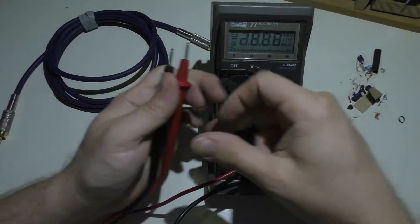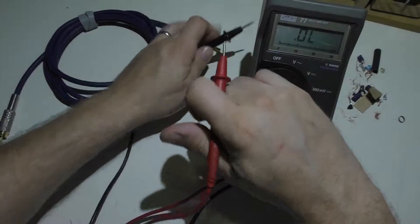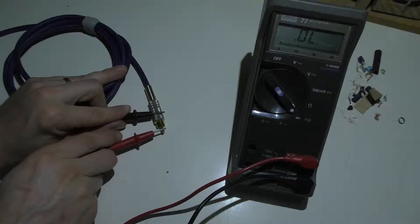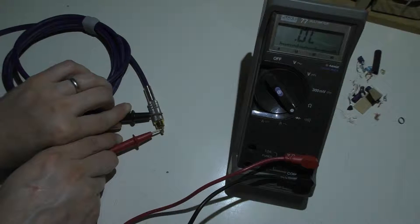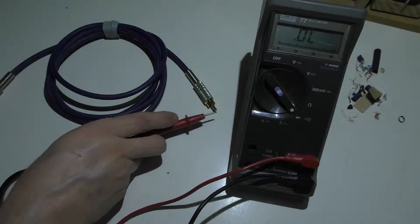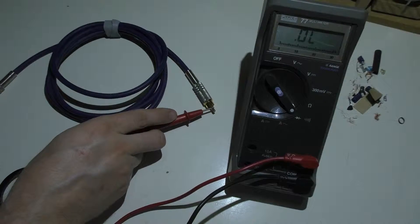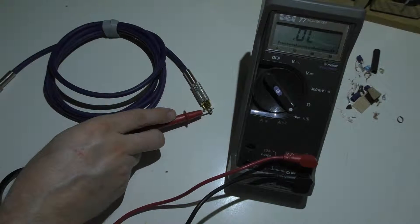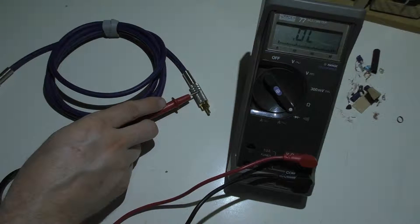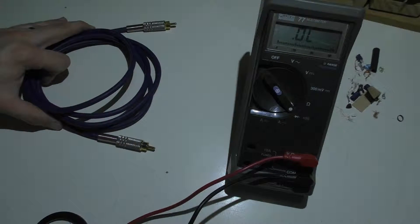And first we'll just do the shield against the pin, which we have nothing. We'll go off to the other side over here. We'll do pin to pin, which we have tone. We'll do shield to shield, which we have tone. And I'll just double check on both sides. We'll go pin to shield and the shield to pin again and we have nothing. So yeah, I'm very confident this wire is going to work once it's put back into service.